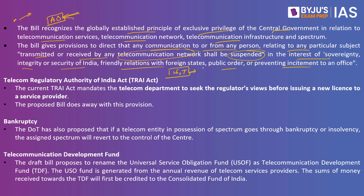From the Puttaswamy judgment, the right to privacy became an important aspect of the right to life. If the government is intercepting messages or they are being read by an authorized officer, this violates privacy and can also be misused by authorities. Who will keep a check on these authorities is a major question. The central government is also planning to amend the TRAI Act to dilute the recommendatory body's function — the TRAI Act currently mandates the telecom department to seek the regulator's view before issuing a new license.